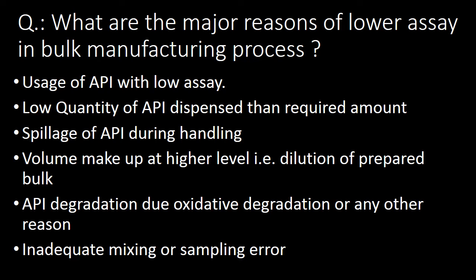What are the major reasons for lower assay in bulk manufacturing process? The six major reasons are: first, usage of API with low assay; second, low quantity of API dispensed than the required amount; third, spillage of API during handling or addition; fourth, volume makeup at a higher level causing dilution of prepared bulk; fifth, API degradation due to oxidative degradation or any other reason; and sixth, inadequate mixing or sampling error.